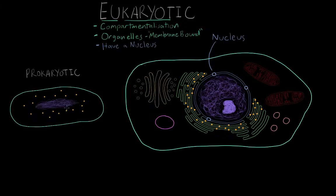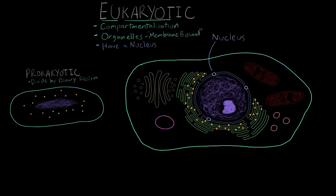In contrast, prokaryotic cells have their genetic material, as well as everything else in the cell, just kind of floating around all in one big space. So in prokaryotes, to divide and become new cells, all they have to do is make two copies of everything and then split down the middle in a process called binary fission. But in eukaryotes, because the cell has all of these different compartments or organelles, there's a more complex way to divide into a new cell, and the process that eukaryotic cells use to divide is called mitosis.